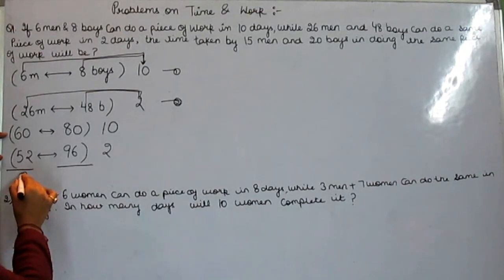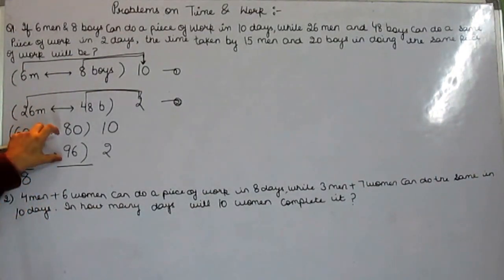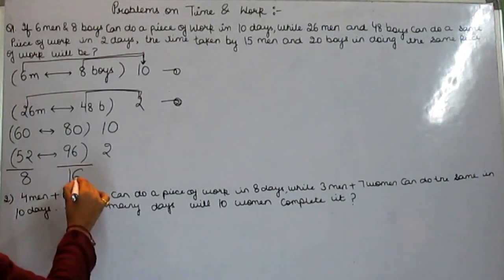Now subtract 52 from 60, you will get 8. Subtract 80 from 96, you will get 16.